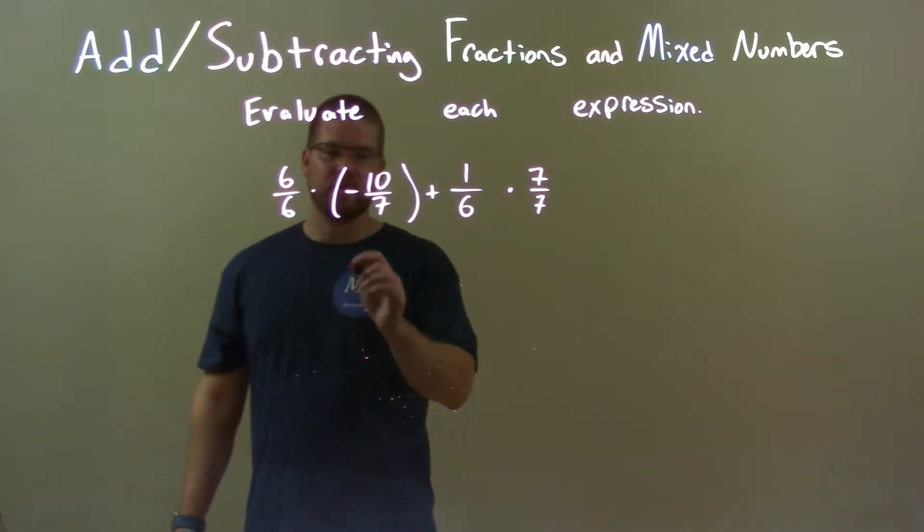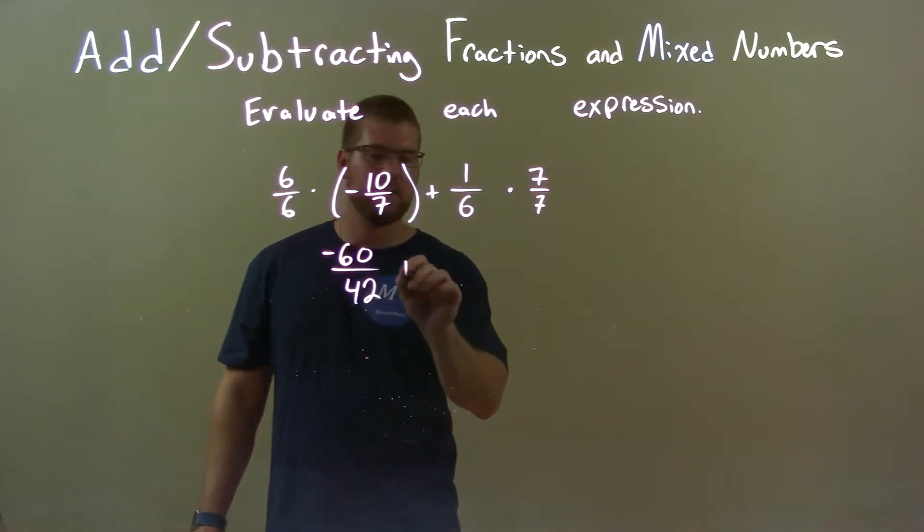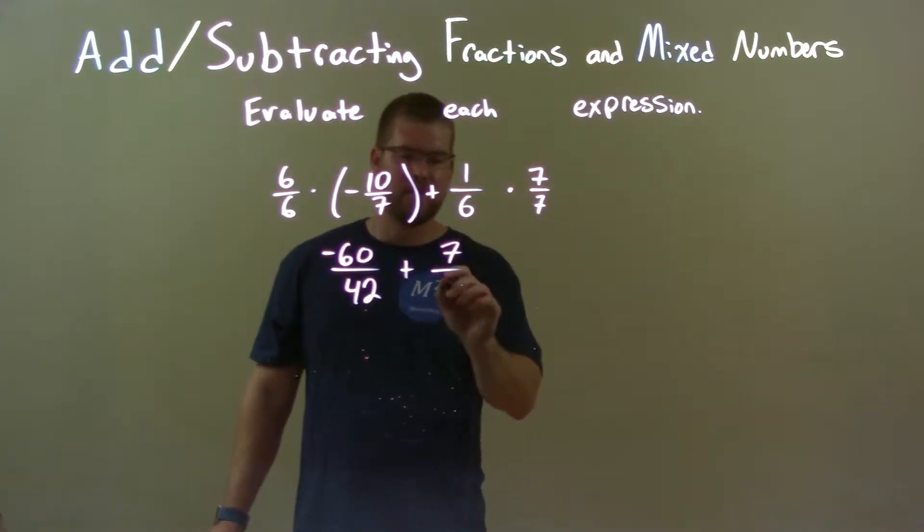6 times negative 10 is negative 60, and 6 times 7 is 42. We add here, 7 times 1 is just 7, and 6 times 7, again, is 42.